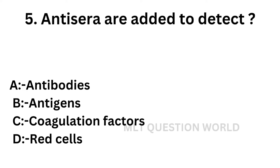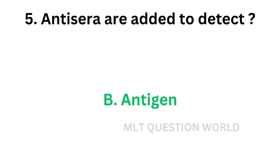Question number 5: Antisera are added to detect — option A: Antibodies, option B: Antigens, option C: Coagulation factors, option D: Red cell. The correct answer is option B, Antigen. Antisera are added to detect antigens.